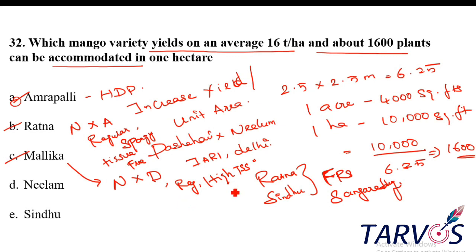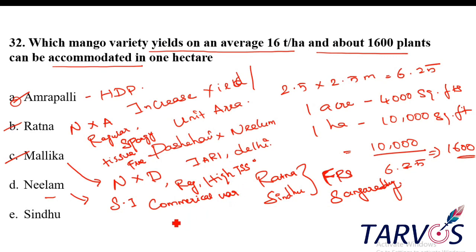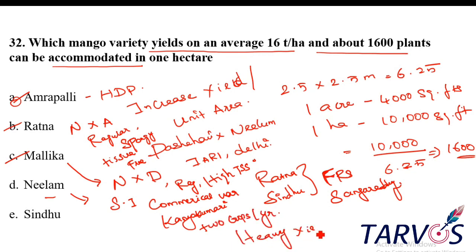TSS is one important character. Neelam is an important commercial variety in South India. It is a regular bearer with very good fruit quality. You can get two crops per year. Neelam variety is a heavy yielding variety. It is an important late season variety.